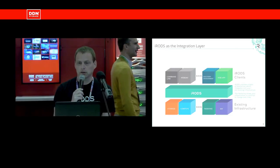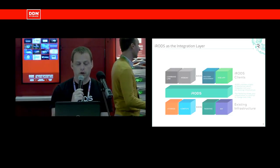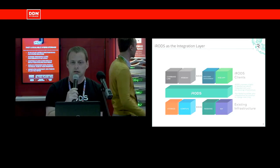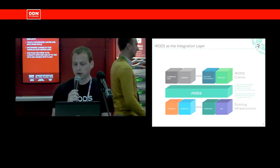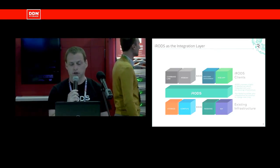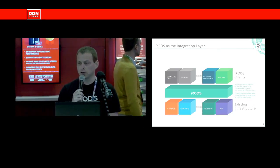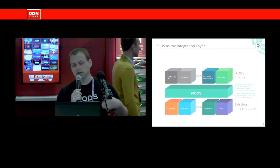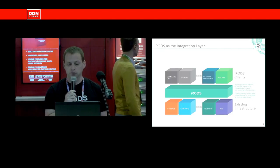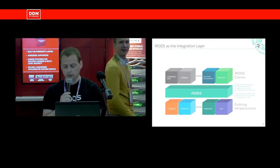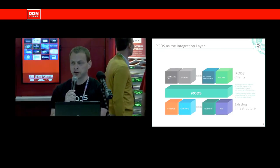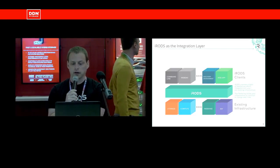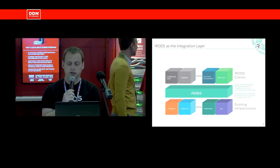iRODS sits in the middle. People have bought all kinds of things already — it's called existing infrastructure and sunk cost. We see ourselves as a bit of glue that abstracts that different sunk cost between storage, compute, and different types of authentication. It sits between that and the different types of clients and users that you might have. This allows your infrastructure to change over time but provides a common namespace — it's kind of an insurance policy as things change.